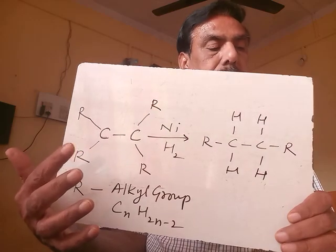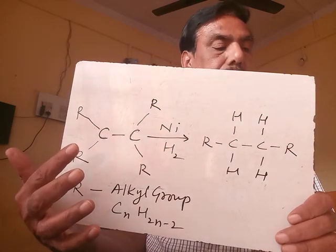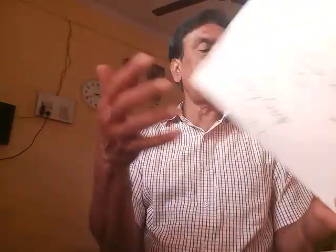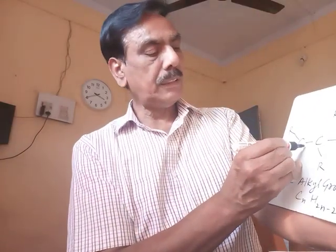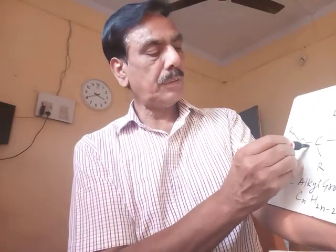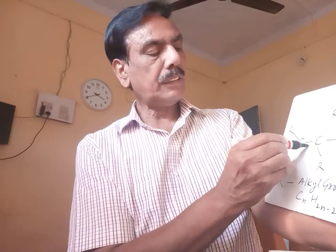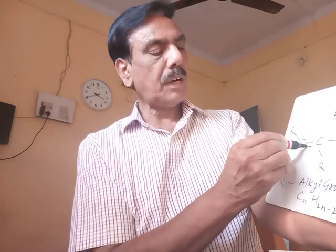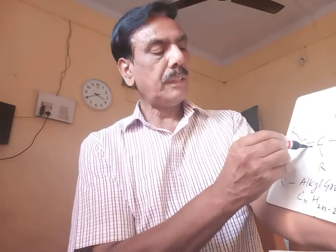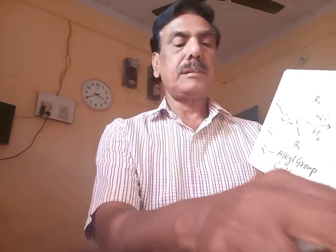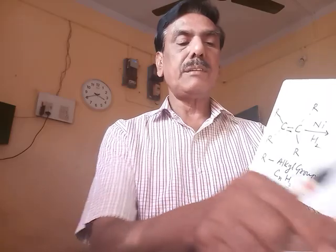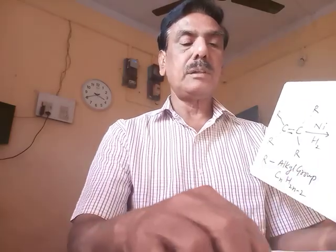This one is an unsaturated hydrocarbon — there is a double bond here. Unsaturated hydrocarbons have double or triple bonds; they do not have single bonds only. The bond between carbon and carbon is a double bond.